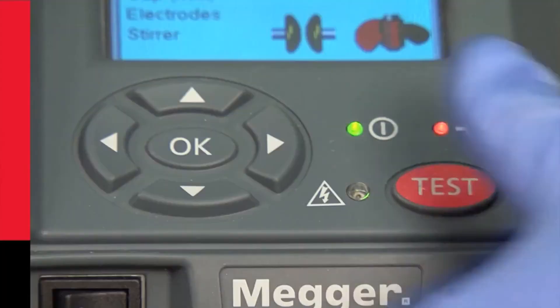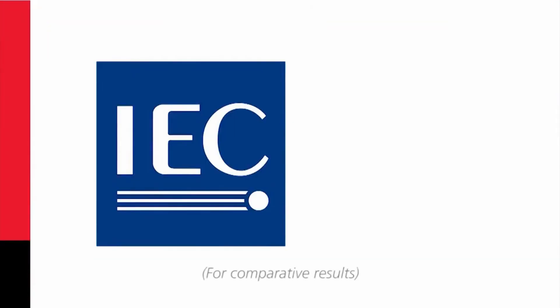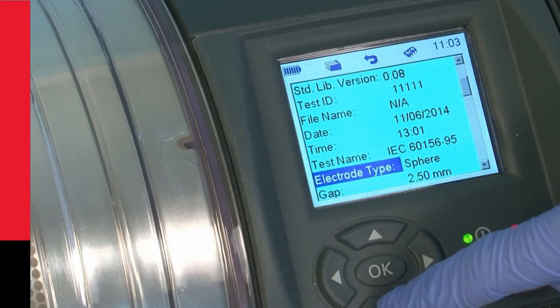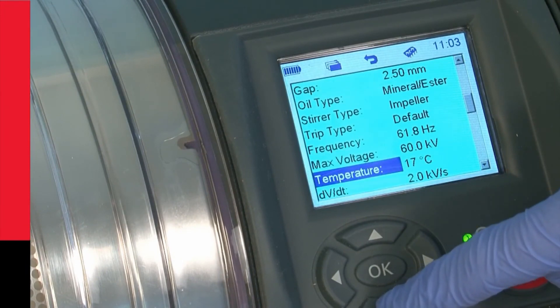Remember, a sample should only be tested once, and IEC require that the oil sample be tested at a temperature between 15 and 25 degrees centigrade, and ASTM 20 and 30 degrees centigrade. And the temperature needs to be recorded with the test results, of course.